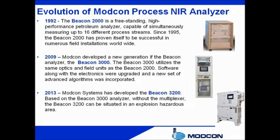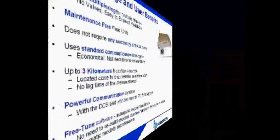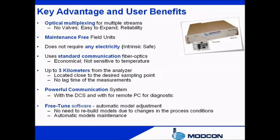The Beacon 3200 is installed either in the control room or in any other fire and explosion hazardous area. Various types of NIR process analyzers are on the market, all with comparable properties. These analyzers are installed in process units close to the measuring site, which requires an explosion-proof housing and installation in a shelter.